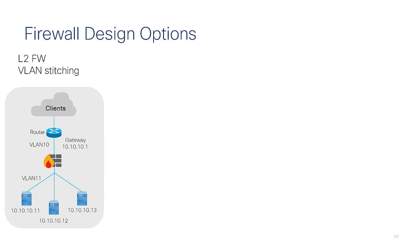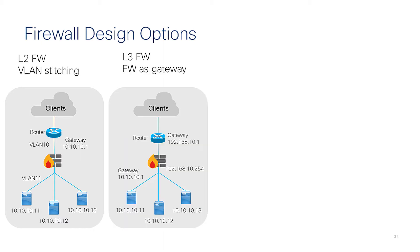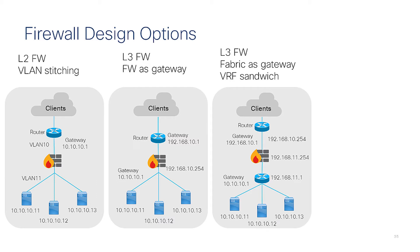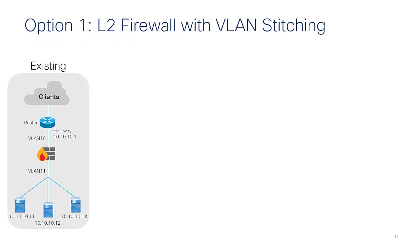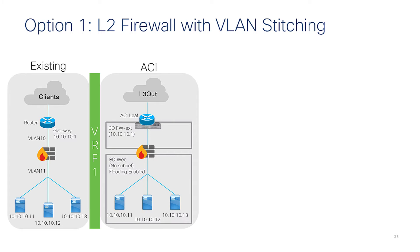Let's take a look at the firewall design options. Starting from classic networks before ACI: you could deploy a firewall in layer two mode between two different VLANs (that's the VLAN stitching mode), you could have the firewall as the default gateway for servers, you could have the firewall sandwiched between VRFs, or you could use policy-based routing. Let's take a look at the layer two firewall with VLAN stitching and how to map it to ACI.